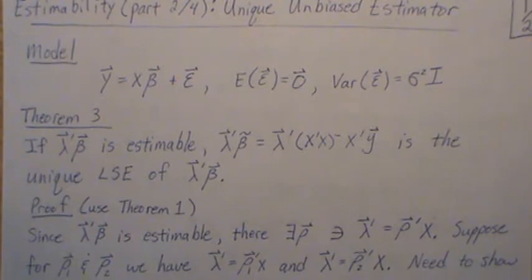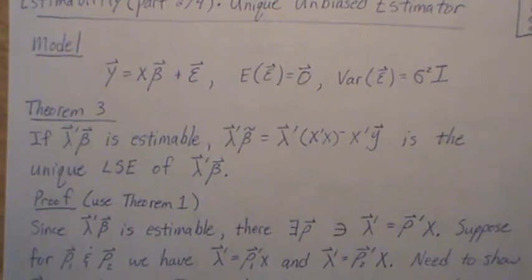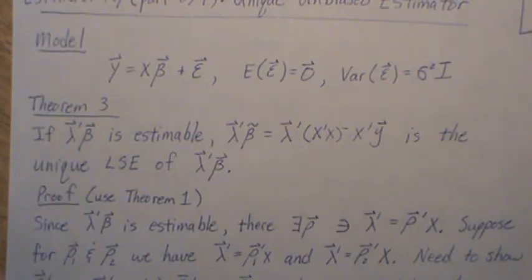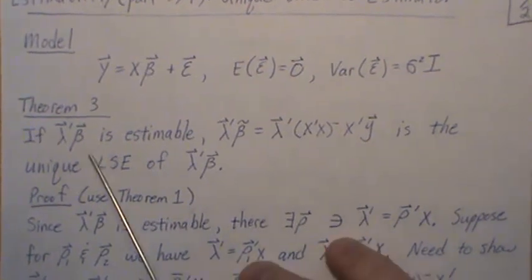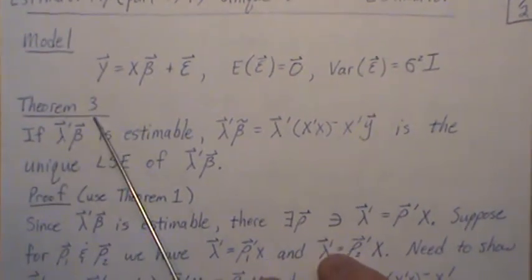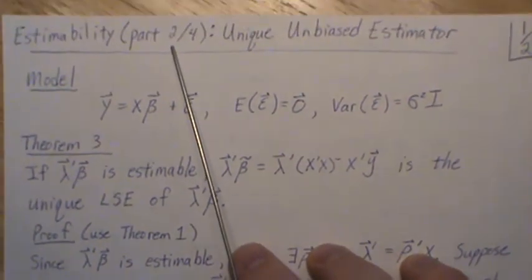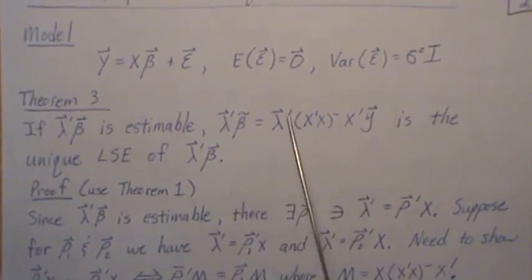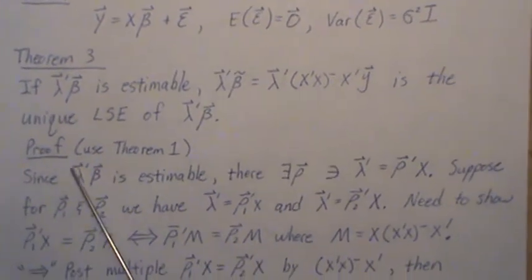The very last thing we're going to touch upon is what a testable hypothesis is. You'll often see statements like 'if this is a testable hypothesis, then this follows' — so we'll define that at the end. Theorem 3: theorems 1 and 2 were in part 1. So if lambda prime beta is estimable, then lambda prime beta-tilde is the unique least squares estimator.